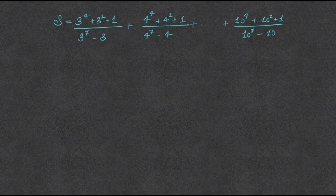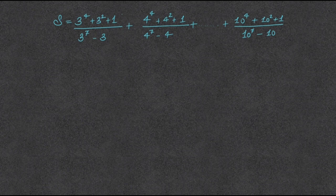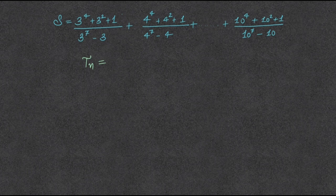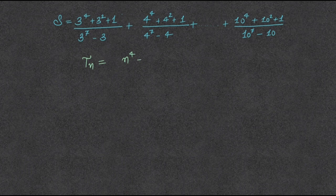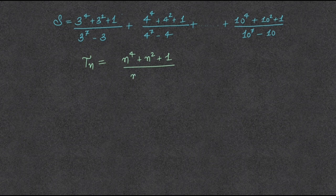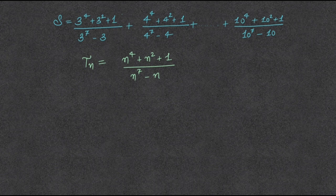So we need to find the sum of this expression. First of all we would like to write the general term. Let Tn be the general term and I am writing the sequence here, that is n to the power 4 plus n square plus 1 upon n to the power 7 minus n. Each term is following the sequence.